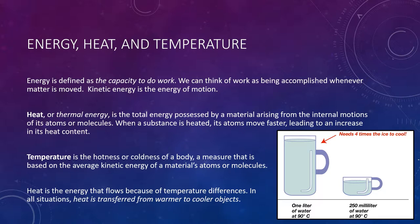One type of energy is described as kinetic energy, which is the energy of motion. Recall that matter is composed of atoms or molecules that are constantly in motion and therefore possess kinetic energy. Heat is a term commonly used synonymously with thermal energy — it is the energy possessed by a material arising from the internal motions of its atoms or molecules. Whenever a substance is heated, its atoms move faster and faster, which leads to an increase in its heat content.